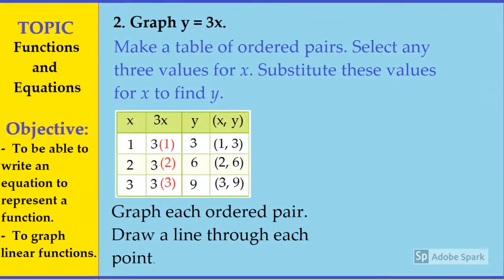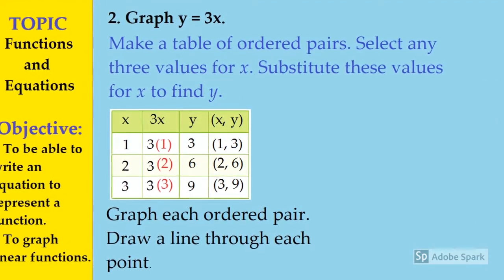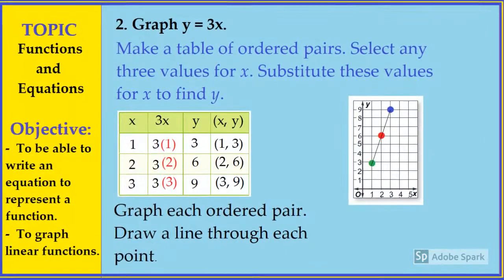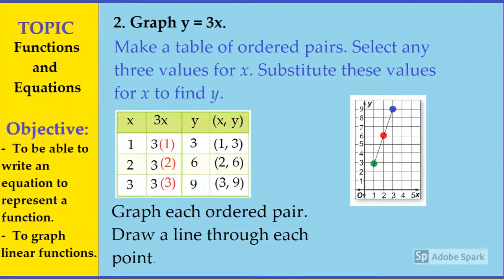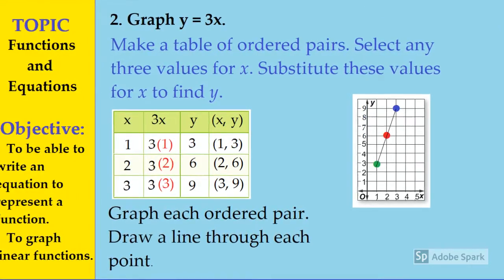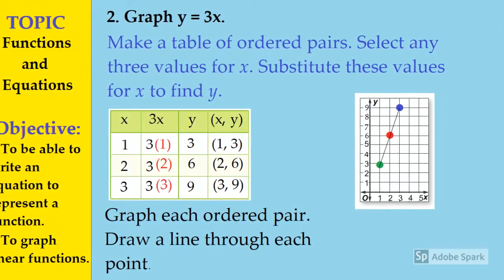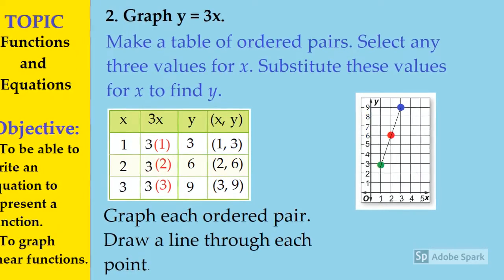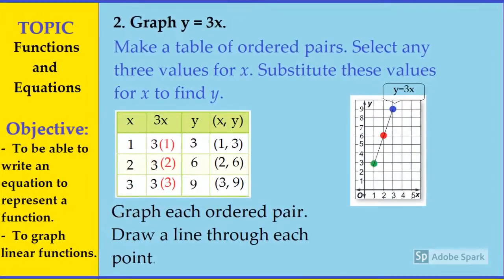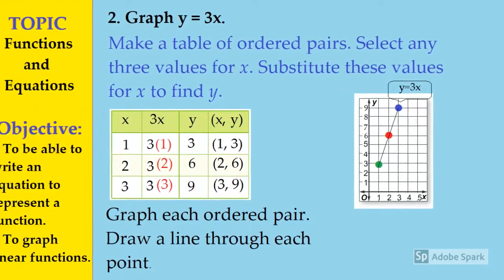Now we can graph each ordered pair and draw a line through each point. As you can see from the graph, when x is 1, y is 3; when x is 2, y is 6; and when x is 3, y is 9. And this is the graph of y = 3x. It's easy!